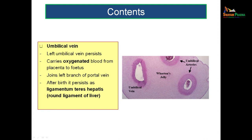Initially there were 2 umbilical veins, but one degenerates — the vein left behind is the left umbilical vein. Though called a vein, it carries oxygenated blood from the placenta to the fetus. It joins the portal vein to continue fetal circulation. After birth it degenerates and persists as the ligamentum teres hepatis — the round ligament of the liver.